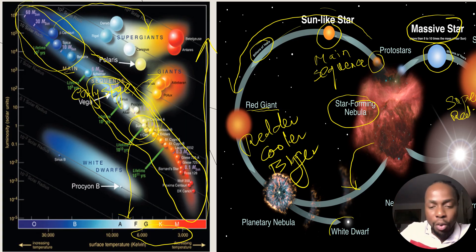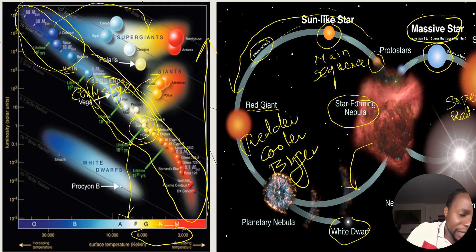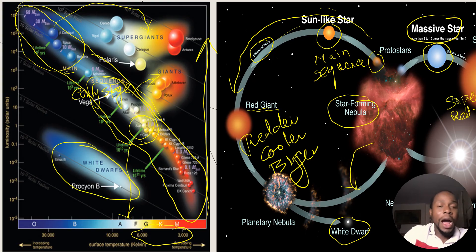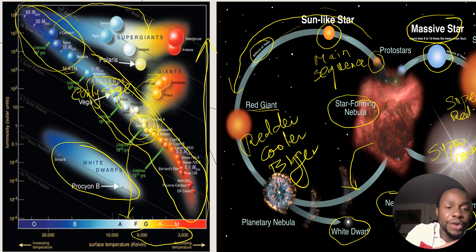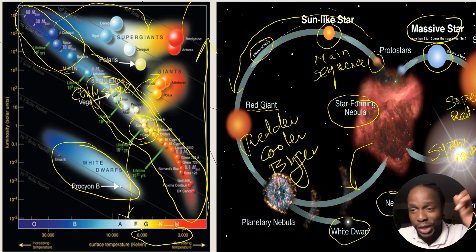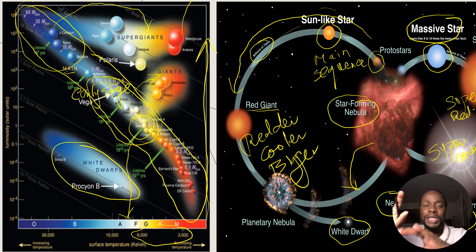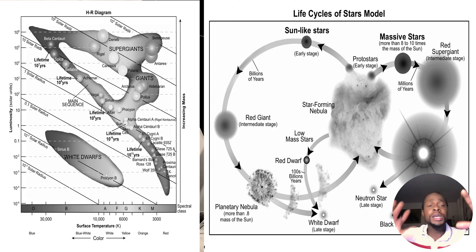A red giant will eventually explode and die, producing a white dwarf — those are the stars you see here in the white dwarf region of the reference table. For supergiants, they go through an explosion called a supernova, and from that supernova they become a neutron star or a black hole. Those end states are not shown on this diagram. This is how page five connects to page four.